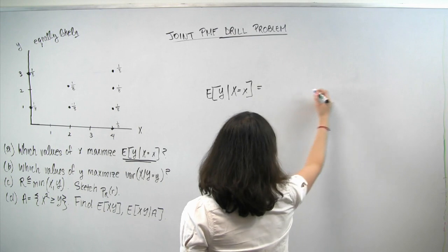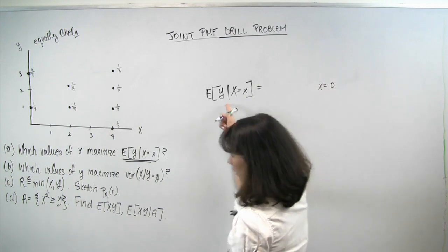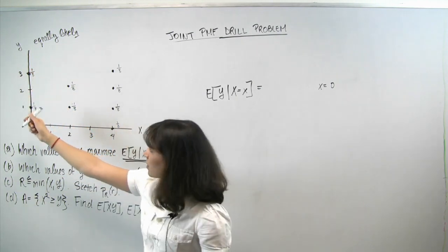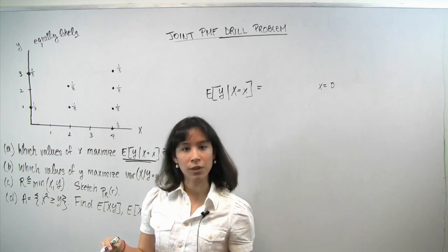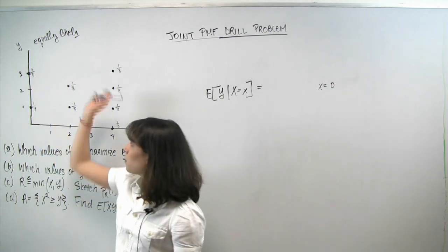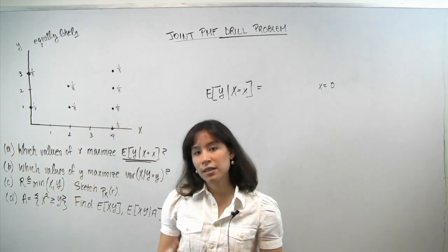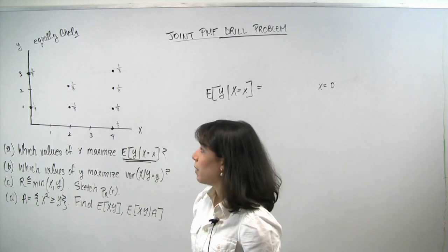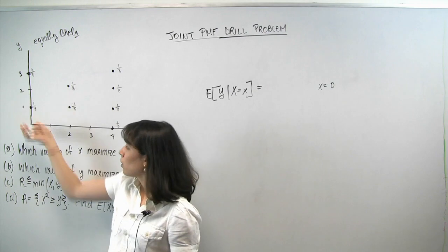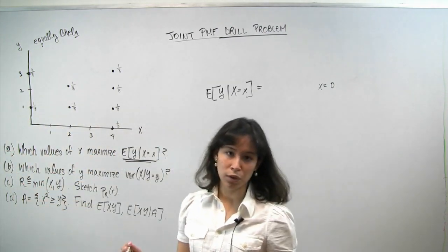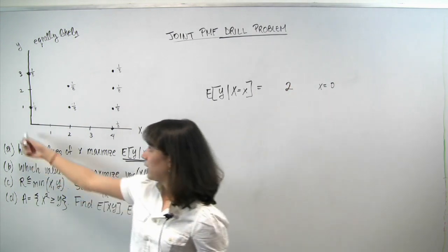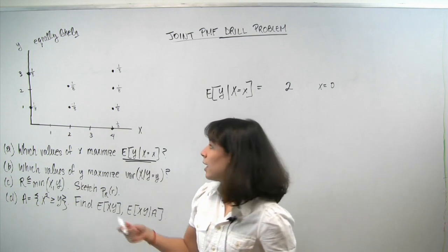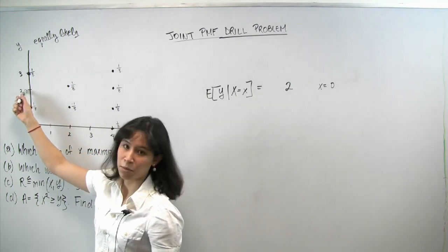When x is equal to 0, we're essentially living on this line, so only two points could have occurred. Y can only take on the values of 1 and 3. Since all points in the unconditional universe were equally likely, in the conditional universe they're still equally likely — each with probability 1/2. So the expectation is 3/2 plus 1/2, which is 4/2, or 2. A faster way to see this is to remember that expectation acts like center of mass, and the midpoint of those two values is simply 2.